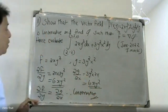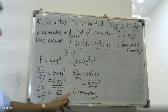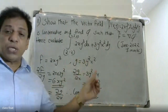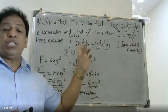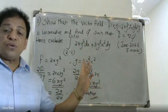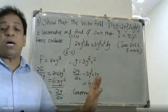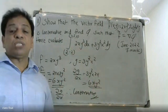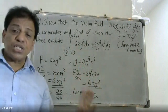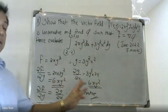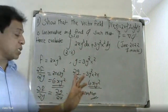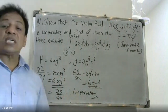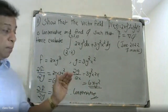For the conservation of the vector field, we check that ∂F/∂y equals ∂G/∂x. We partially differentiate the i-component with respect to y, and partially differentiate the j-component with respect to x. Both answers are 6xy², so they are equal.